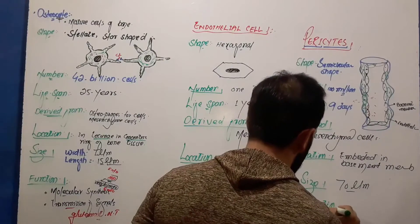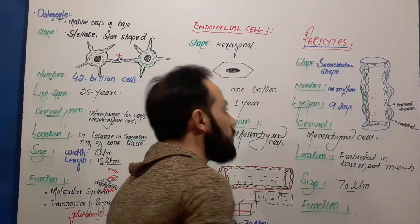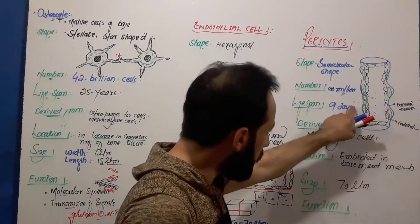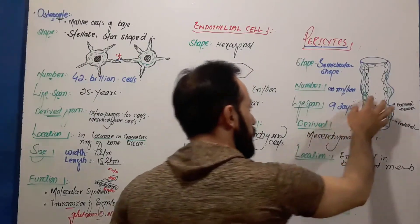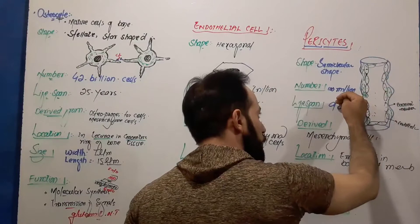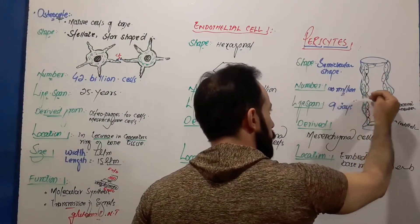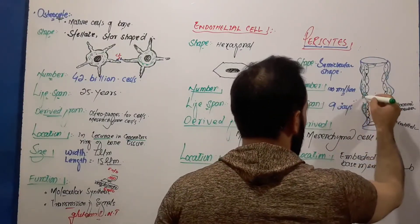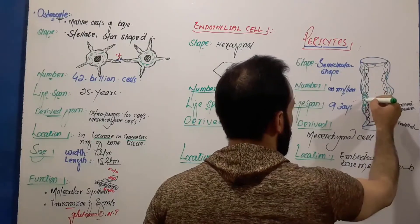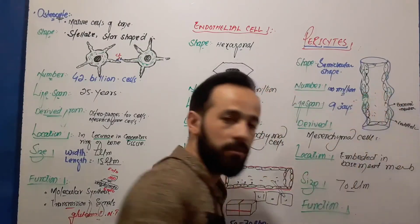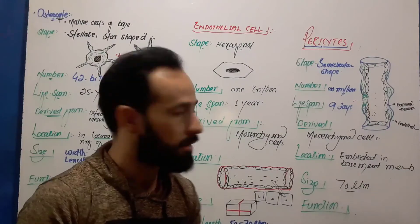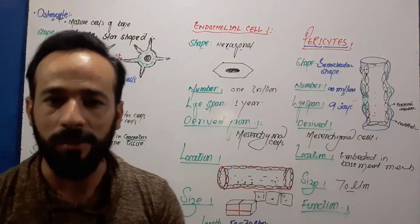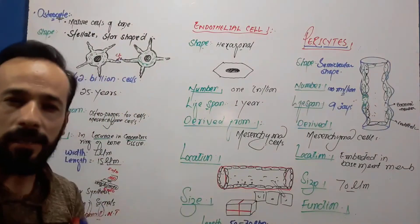The function of these cells is the protection of endothelial cells and blood vessels. Whenever blood vessels are torn and blood oozes out — causing hemorrhage and blood loss — these pericytes migrate to that area and protect it.